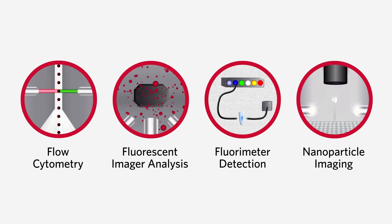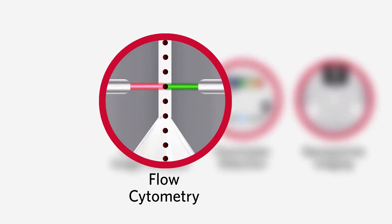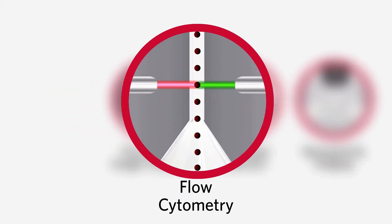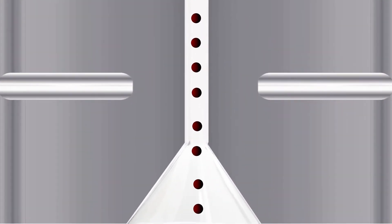One detection method Luminex uses to identify beads and if a target is present is called flow cytometry. With flow cytometry, the beads are fed into a compartment called a cuvette and individually scanned by a red and a green laser.